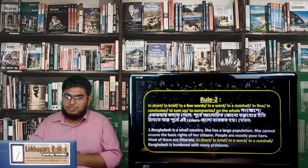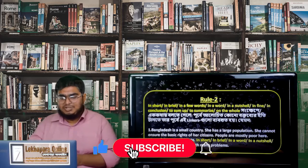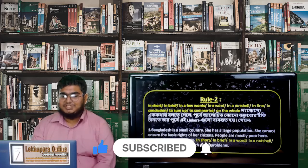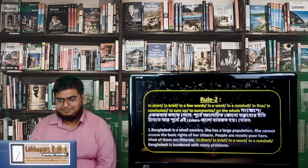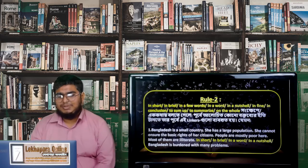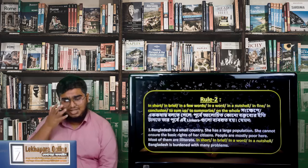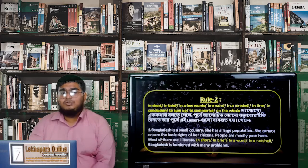For example: Bangladesh is a small country. She has a large population. She cannot ensure the basic rights of her citizens. People are mostly poor here and most are illiterate. In short — or in brief, or our most favorite: in a nutshell — Bangladesh is burdened with many problems.